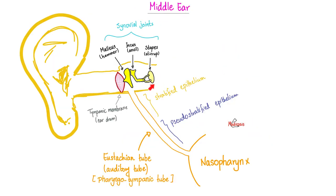Cholesteatoma is a cystic mass in the middle ear. The middle ear contains the three bony ossicles: malleus, incus, and stapes. The stapes has its foot on the oval window — think of your cousin putting his foot on the window, that's the stapes. Do not confuse cholesteatoma with otosclerosis. Cholesteatoma is a cystic mass in the middle ear, whereas otosclerosis is bone deposition causing stiffening of the foot process of the stapes and the oval window.